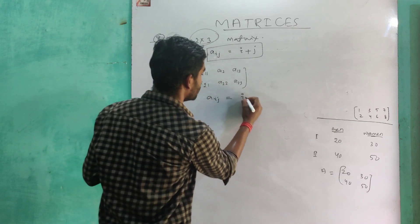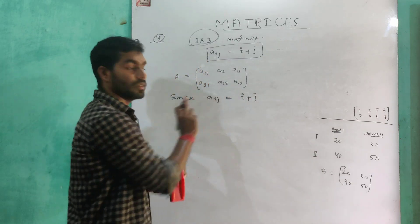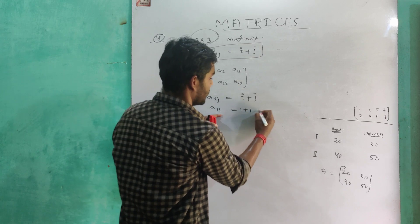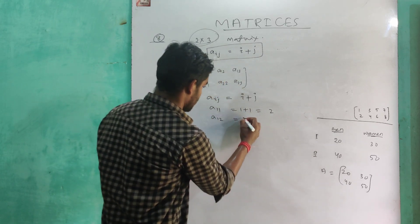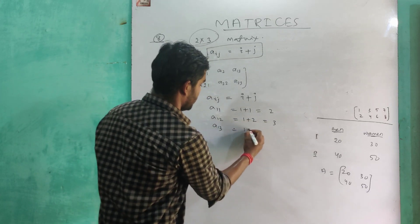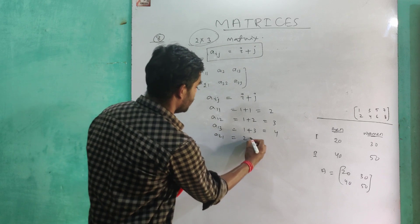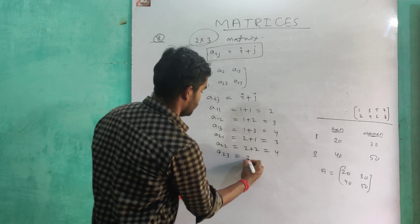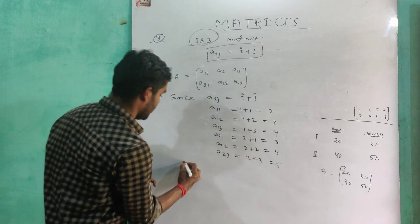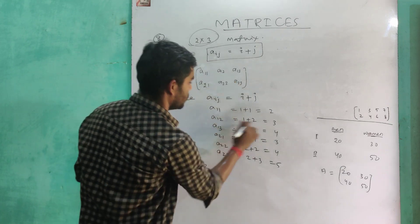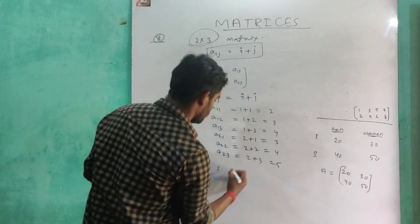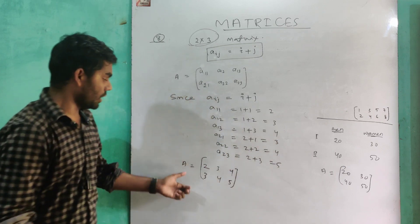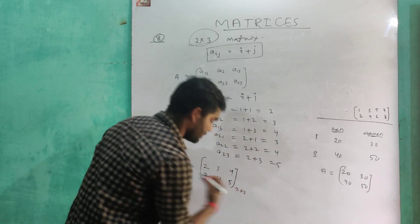Since aij equals to i plus j, where i is the row number and j is the column number: A11 = 1+1 = 2; A12 = 1+2 = 3; A13 = 1+3 = 4; A21 = 2+1 = 3; A22 = 2+2 = 4; A23 = 2+3 = 5. Therefore, we can construct matrix A as [2, 3, 4 / 3, 4, 5] with order 2 by 3. This is the introduction to matrices.